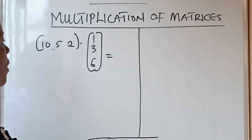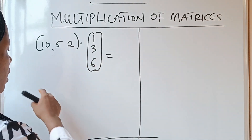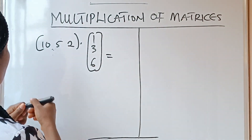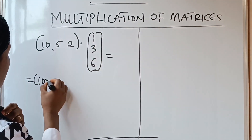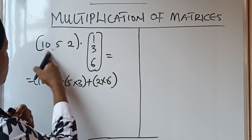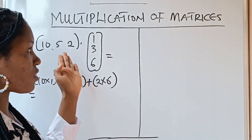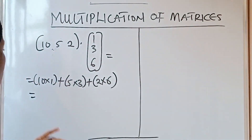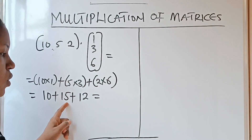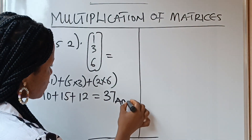This is equal to: the first will multiply the first, the second will multiply the second, the third will multiply the third, and whatever you are getting, you are adding them together, because you are just going to form one single number whenever one row multiplies one column. So this is equal to 10 times 1, plus 5 times 3, plus 2 times 6. That gives us 10 plus 15 plus 12, which equals 25 plus 12 equals 37. And this becomes our answer.